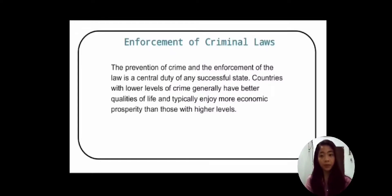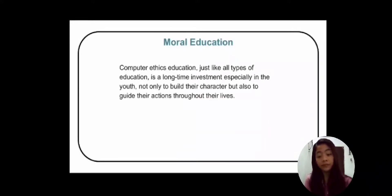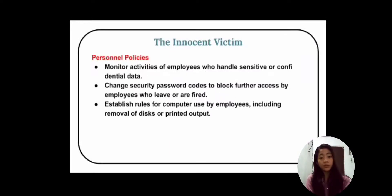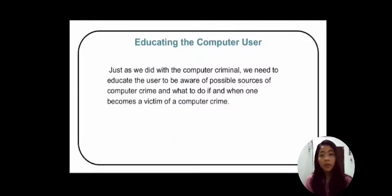Moral education: given the importance of information technology in today's universities, and given the possibilities of unethical use of this technology by students and staff, universities should ensure that they have policies regarding the use and management of information technology. The innocent victim: measures should be focused on victims of computer crimes through three parts of personal policy — monitoring, security, and established rules. Lastly, educating the computer user: we need to educate users to be aware of possible sources of computer crime and what to do if and when one becomes a victim.